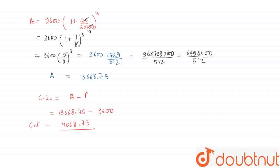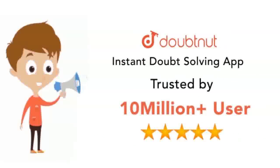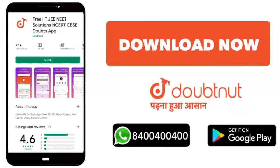So this is our compound interest of 4068.75, and the amount is 13668.75.